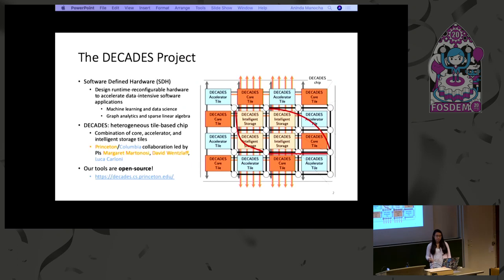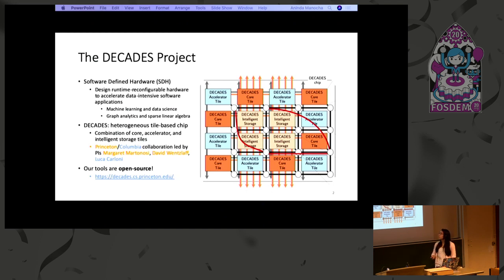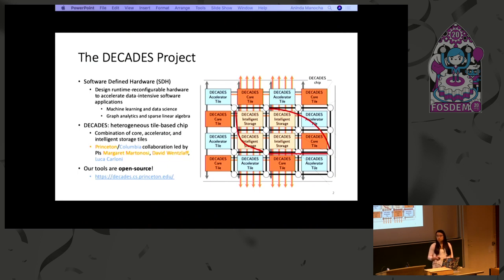I'm going to give a brief overview of what the Decades project is. Decades is part of the DARPA software-defined hardware program, which aims to design runtime reconfigurable hardware that can accelerate a variety of data-intensive software applications in the broad domains of machine learning and graph analytics. The Decades approach is to design a heterogeneous tile-based chip that is a combination of core, accelerator, and intelligent storage tiles. This is a collaborative effort between researchers at Princeton and Columbia University, and all of our tools are or will be open source in the very near future.